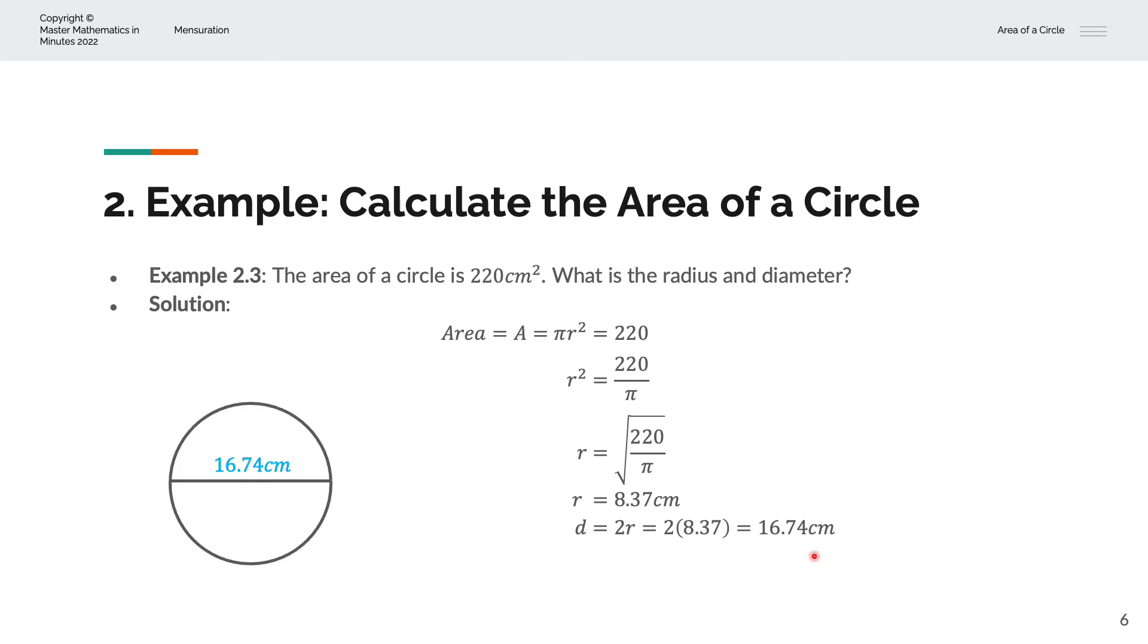And so visually, we have a circle of diameter 16.74 centimeters, which is what we've just calculated. And we have the same circle, but in this case, with the radius of 8.37 centimeters. Again, based on what we've just calculated as well.